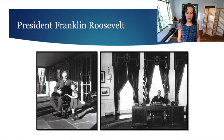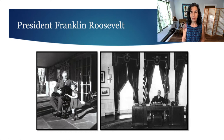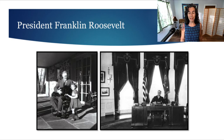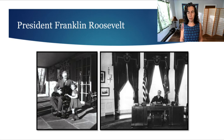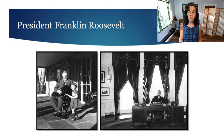Franklin Delano Roosevelt was the 32nd president of the U.S. and he served for four terms. He had polio — back in those days it was before the polio vaccine, an interesting analogy with our COVID vaccine today — and he became paralyzed from the waist down, so he was a wheelchair user. He hid his wheelchair use from the public. On the right side you can see the wheelchair actually underneath his desk, but he went to great lengths to hide it, mostly because of the stigma around using a wheelchair and what that might mean.